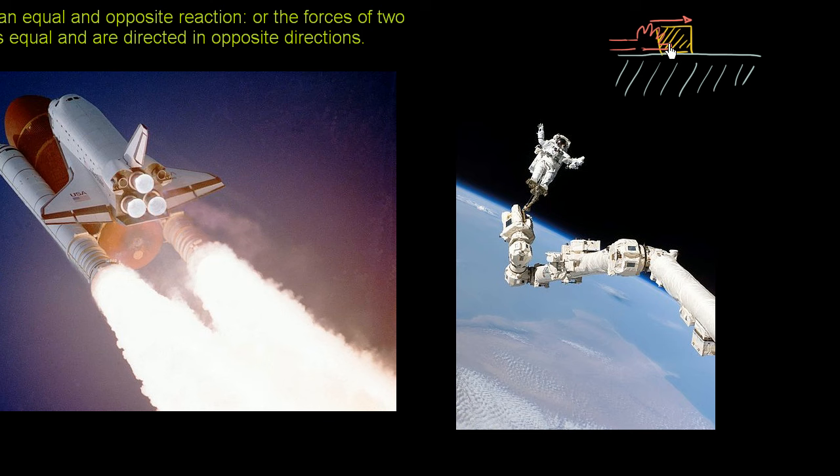So Newton's third law is saying, look, I can press on this block, and sure, I'll exert a net force on this block, and that net force will accelerate the block, assuming that I can overcome friction. And if it's on ice I can do that. But that block is going to exert an equal and opposite force on me.